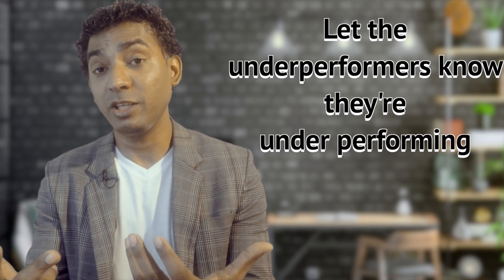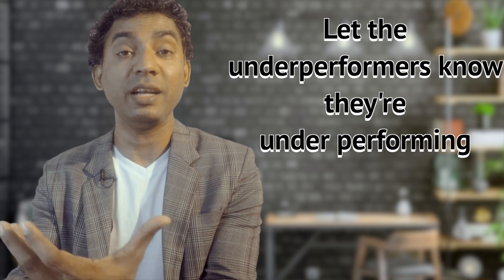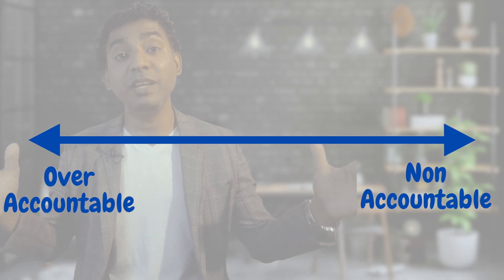Therefore, the point is you need to tell your underperformers and let them know that they are underperforming. At the same time, you have to give praise and appreciation for the top performers. Therefore, remember the ideal accountability is in between these two scales.